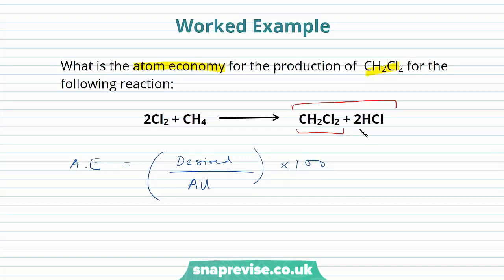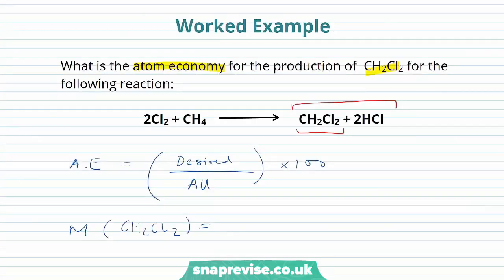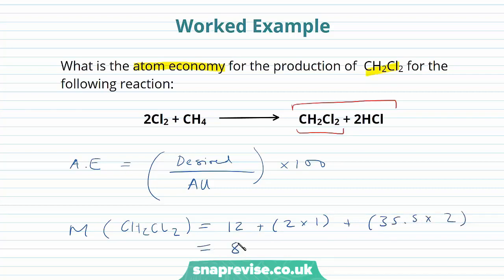Our desired product is dichloromethane, so we can work out its molar mass. That's CH₂Cl₂. From the periodic table, hydrogen has a molar mass of 1, carbon 12, and chlorine 35.5. That gives dichloromethane a molar mass of 12 plus 2 times 1 plus 35.5 times 2, a total of 85.